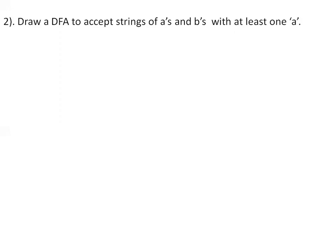We'll go for the second problem on DFA: draw a DFA to accept strings of A's and B's with at least one A. Our alphabet Sigma will be equal to {A, B} because the input strings consist of both alphabets. The condition is at least one A, so the minimum requirement of this DFA is a single A.